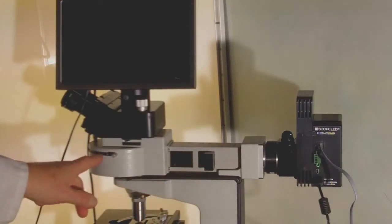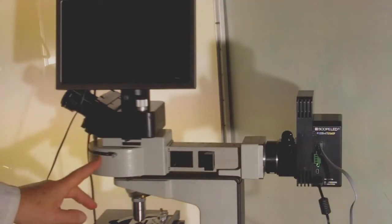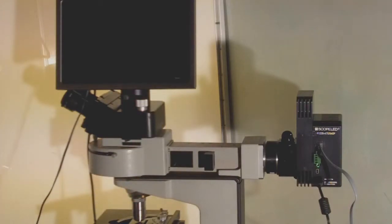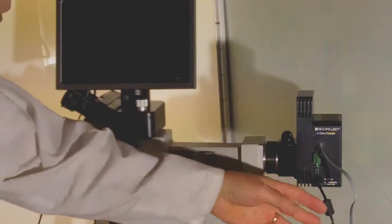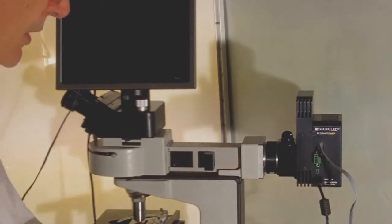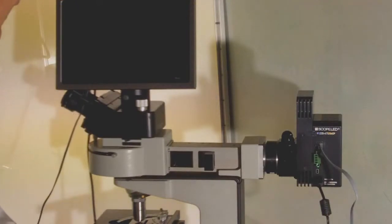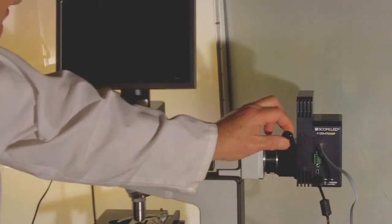Built into the Plume illuminator are the standard filter cubes based on the fluorochromes that you'll be working with. The F-Series Scopeled is made in America. It just requires a standard AC-DC power supply that comes with it. The unique feature about this lamp housing is the built-in collector lens.